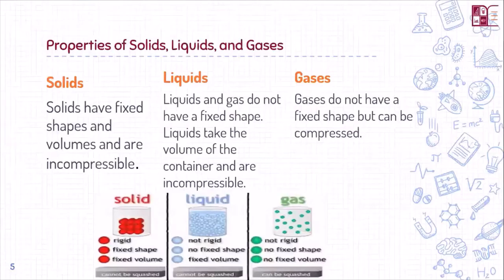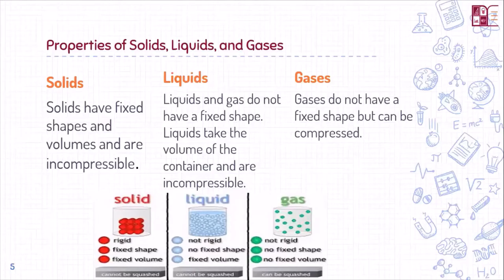Now I am going to discuss the properties of solids, liquids and gases. Solids are rigid — they have a fixed shape and a fixed volume. They are not compressible. Liquids cannot be compressed either, but gases can be compressed. Liquids take up the shape of their container — they do not have a fixed shape, and neither do gases. As you can see in the diagram, liquids are not rigid. Whatever shape the container is, they take that shape, but they have a fixed volume.